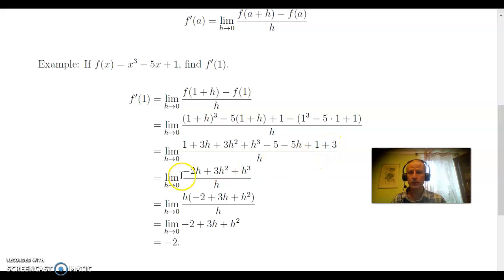Now, it turns out that we've got 1 minus 5 plus 1 plus 3 are the constant terms, and all those cancel. And grouping other like terms, we get the limit as h goes to 0 of minus 2h plus 3h squared plus h cubed all over h.